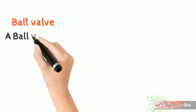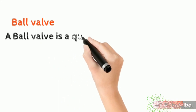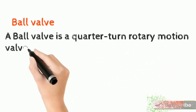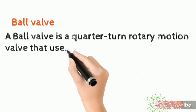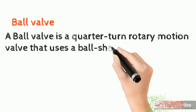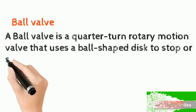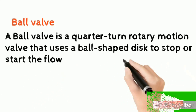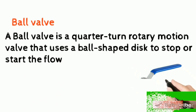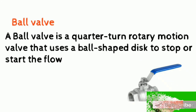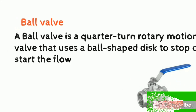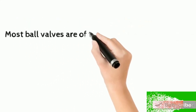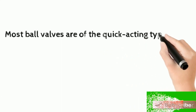The ball valve is a quarter turn rotary motion valve that uses a ball-shaped disc to stop or start the flow. Most ball valves are of the quick acting type, which requires a 90 degree turn of the valve handle to operate the valve. The ball valve is smaller and lighter than a gate valve of the same size and rating.